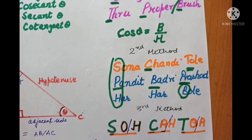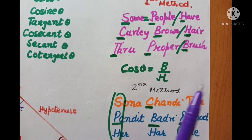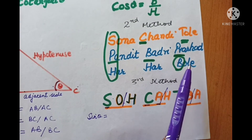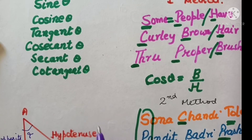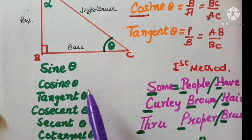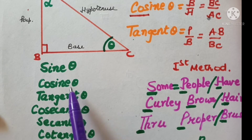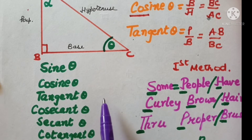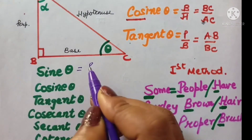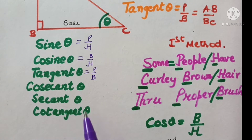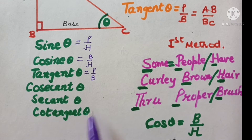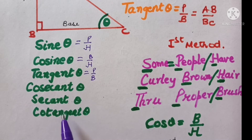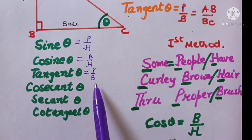Now let us write down the remaining three T-ratios. Sine theta is perpendicular upon hypotenuse, cosine is base upon hypotenuse, tangent is perpendicular upon base. The remaining three T-ratios are reciprocals of sine, cos, and tan. Reciprocal of sine theta is cosecant theta — its formula will be H over P. Reciprocal of cosine theta is secant theta — formula H upon B. And cotangent is the reciprocal of tangent theta — formula B by P.